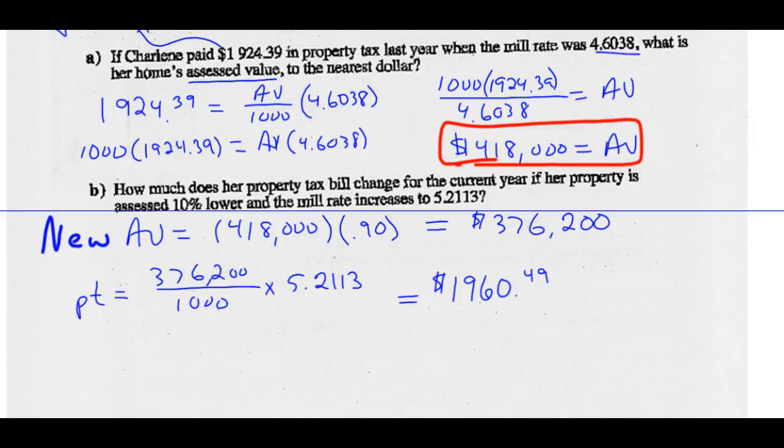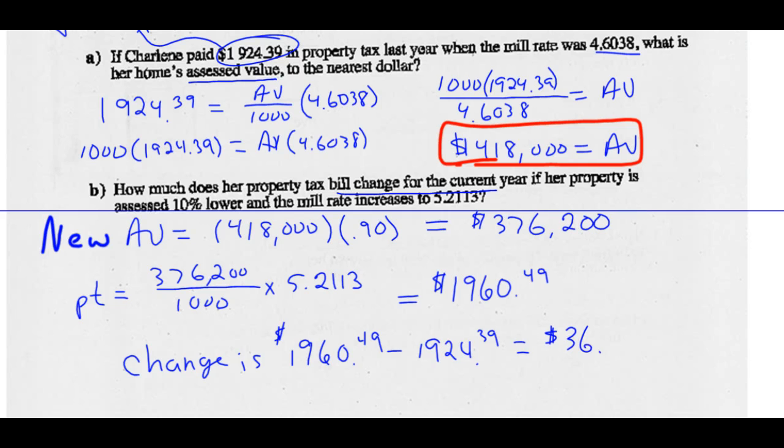The question says, how much does her property tax bill change for the current year? So last year, she paid $1,924.39. This year, it's $1,960.64. So the change is a subtraction of those two, $1,960.49 take away last year's $1,924.39. So the change in her property tax bill was $36.10. That's what that question was asking.